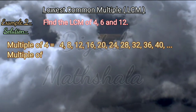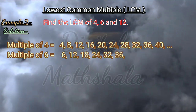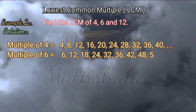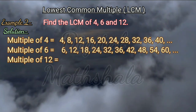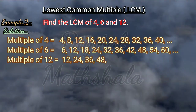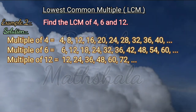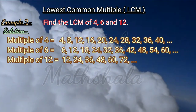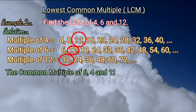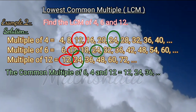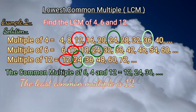Now let us find the LCM of 4, 6, and 12. Multiples of 6 are 6, 12, 18, 24, 32, 36, 42, 48 and so on. Multiples of 12 are 12, 24, 36, 48, 60, 72 and so on. The common multiples of 4, 6 and 12 are 12, 24, 36 and so on. Thus the least common multiple is 12.